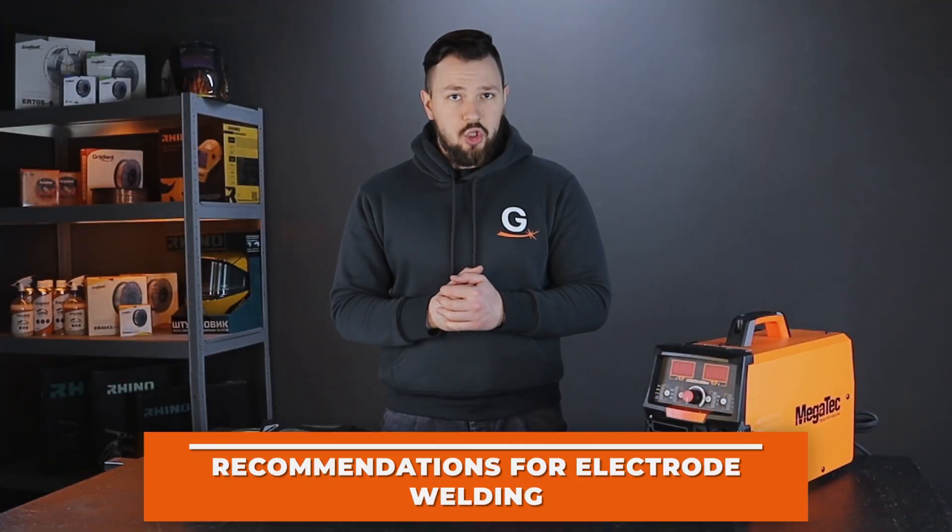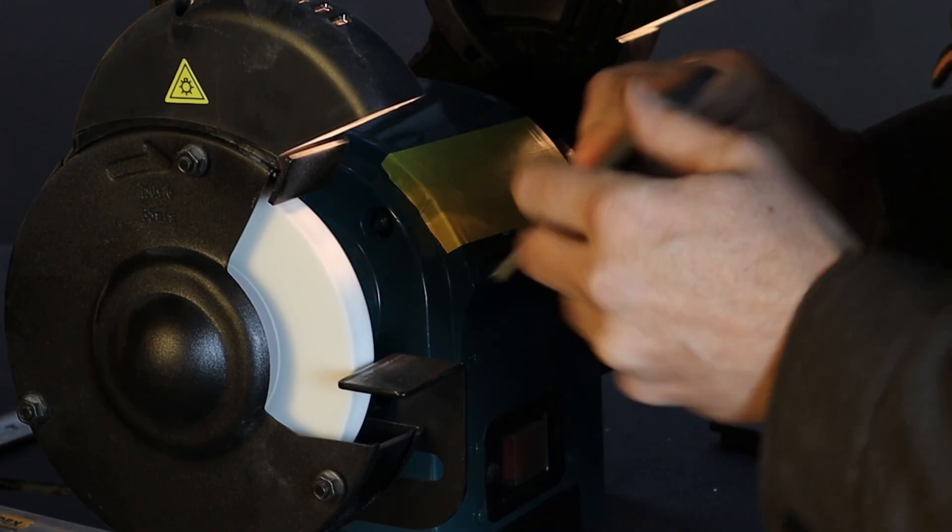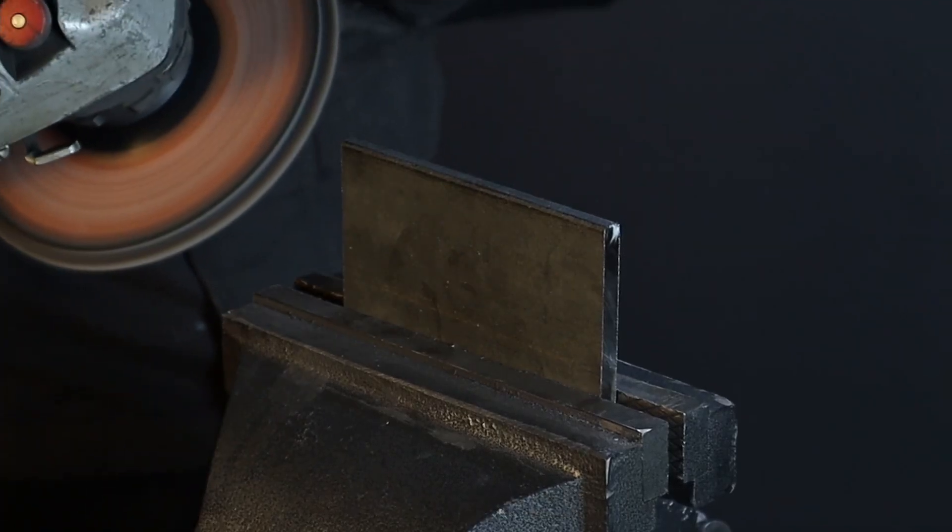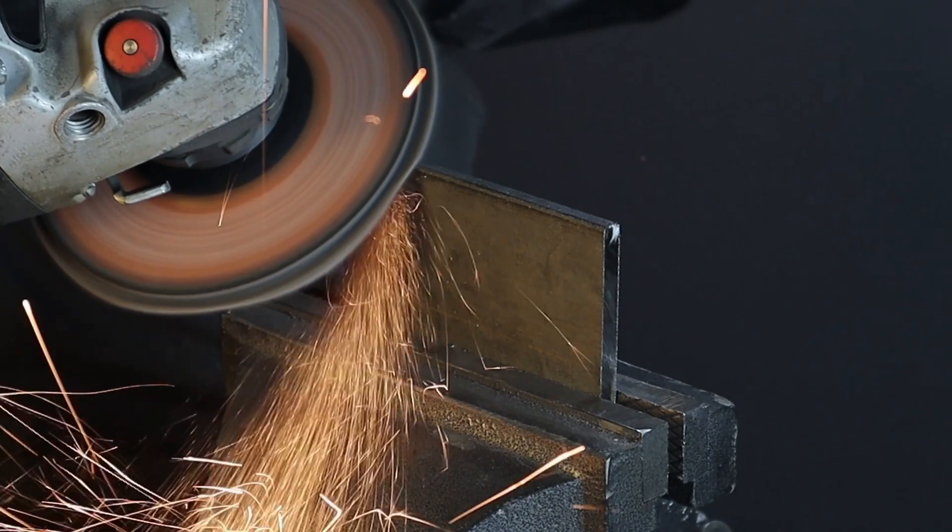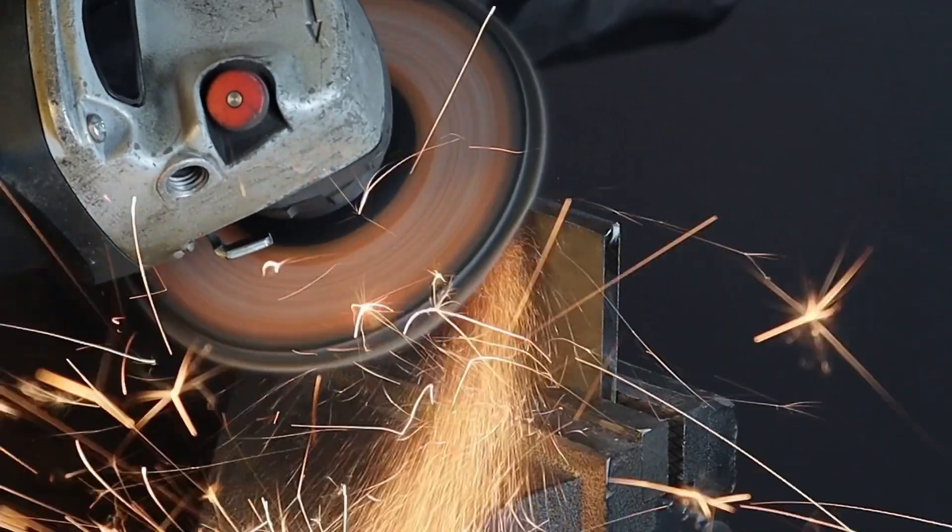For a high-quality ceiling seam with an electrode, the following rules must be followed. For metal with a thickness of 4 mm or more, we recommend chamfering. This will increase the penetration of the metal and the quality of the weld. The contours of the seam will also be better visible.